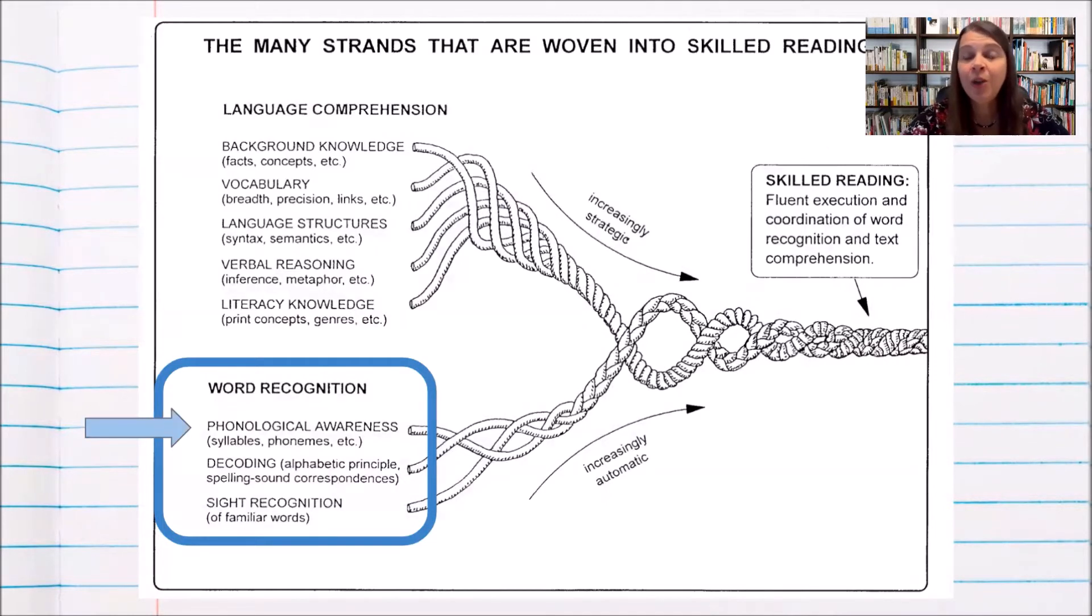First, phonological awareness. That is the ability to hear sounds in language. We need to create in students the ability to hear phonemes, the smallest sounds of language, and build that to the advanced level where they're able to manipulate phonemes and change words around.